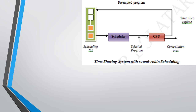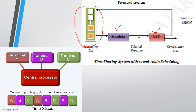Now let us see how a time-sharing system works. In the case of a time-sharing system, the set of processes which are ready are put in a scheduling list. From the scheduling list, the scheduler picks one of the programs and gives it to the CPU for execution. If that process completes its execution, it goes to a terminated or exit state. The time allotted for each process is already fixed. If the time slice expires, the process executing in the CPU will be preempted back to the scheduling list and put at the end of the queue.